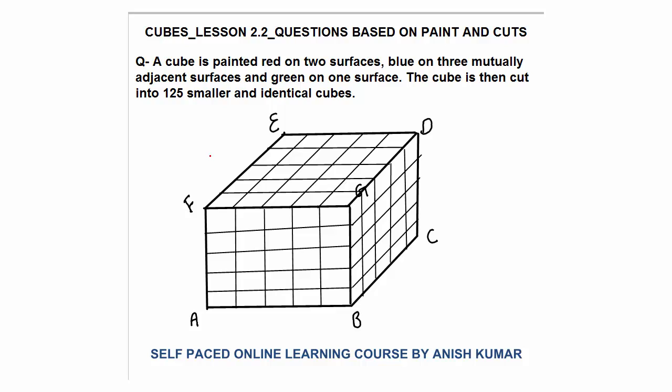Hello, this is Cubes Lesson 2.2. In this I will continue with questions on paint and cuts. A cube is painted red on 2 surfaces, blue on 3 mutually adjacent surfaces, and green on 1 surface. The cube is then cut into 125 smaller identical cubes by making 4 cuts in each direction.